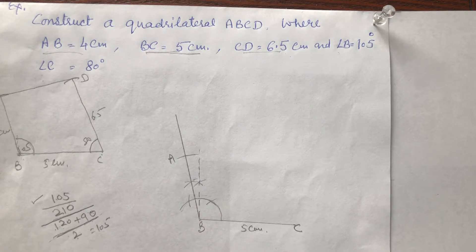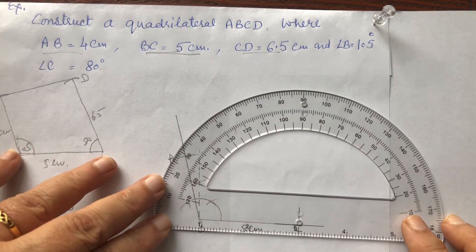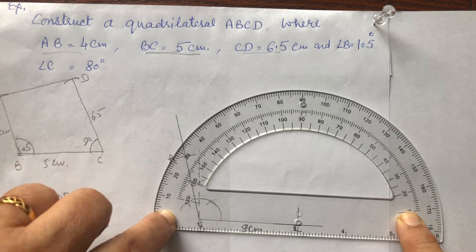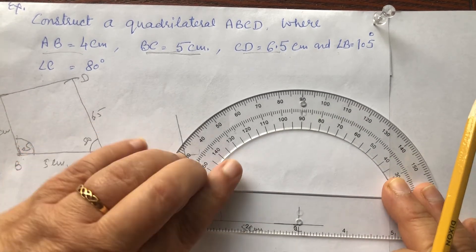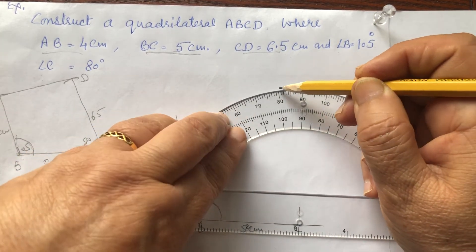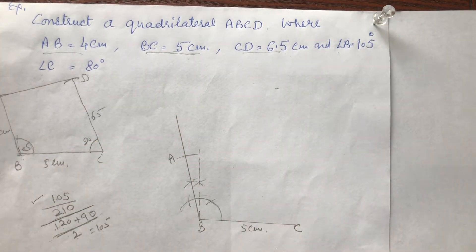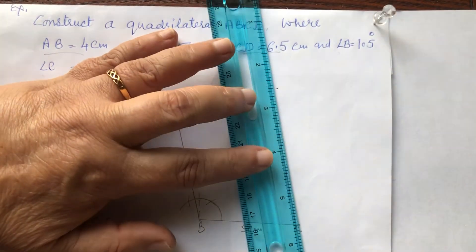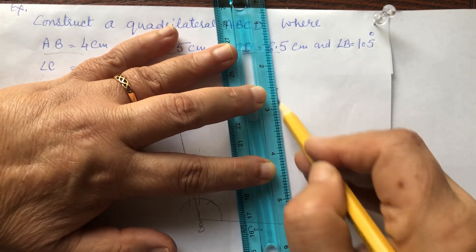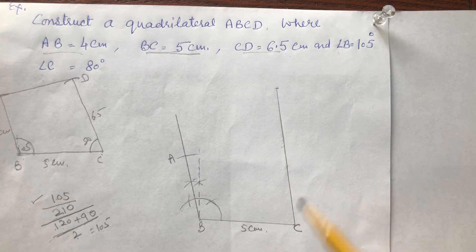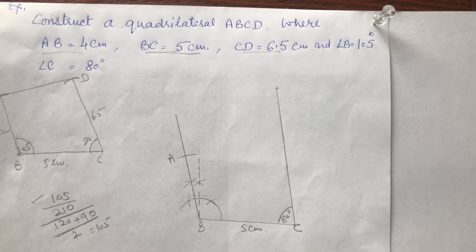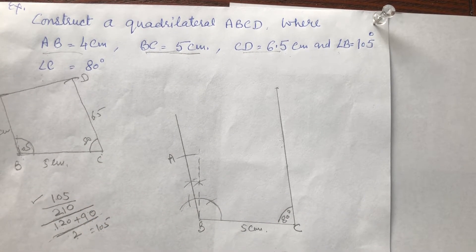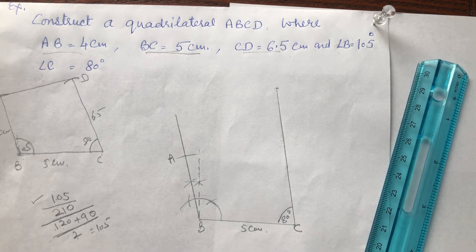At point C we are going to draw angle 80 degrees. As I told you, 80 is not divisible by 15, so it cannot be made with compass. We will draw this angle with the help of a protractor. This is the C point — mark a point at 80 degrees and join it with the C point using a scale. Angle 80 is less than 90, so it will come inward.